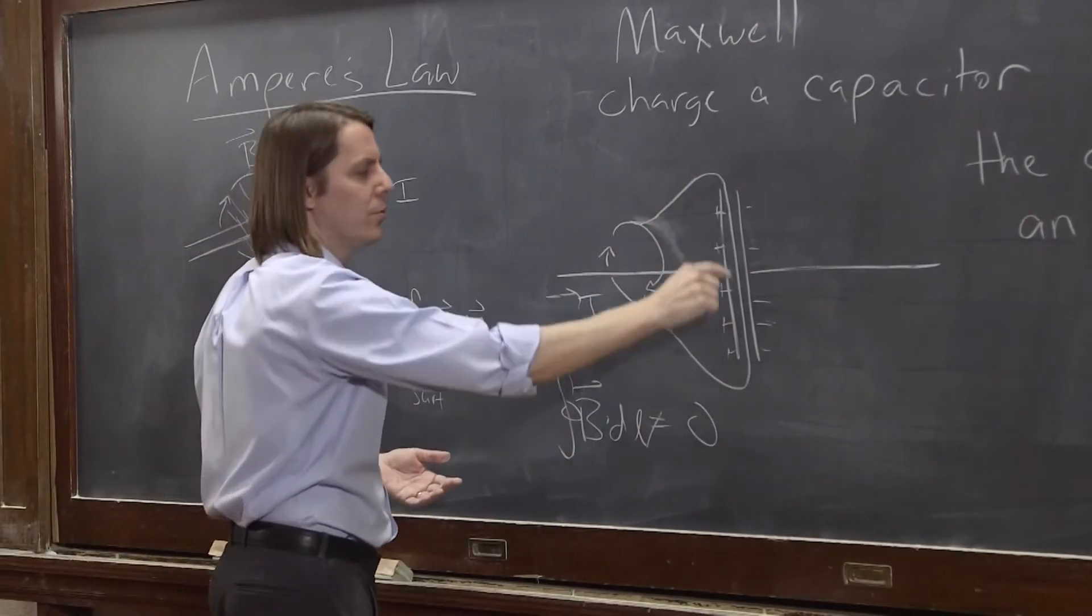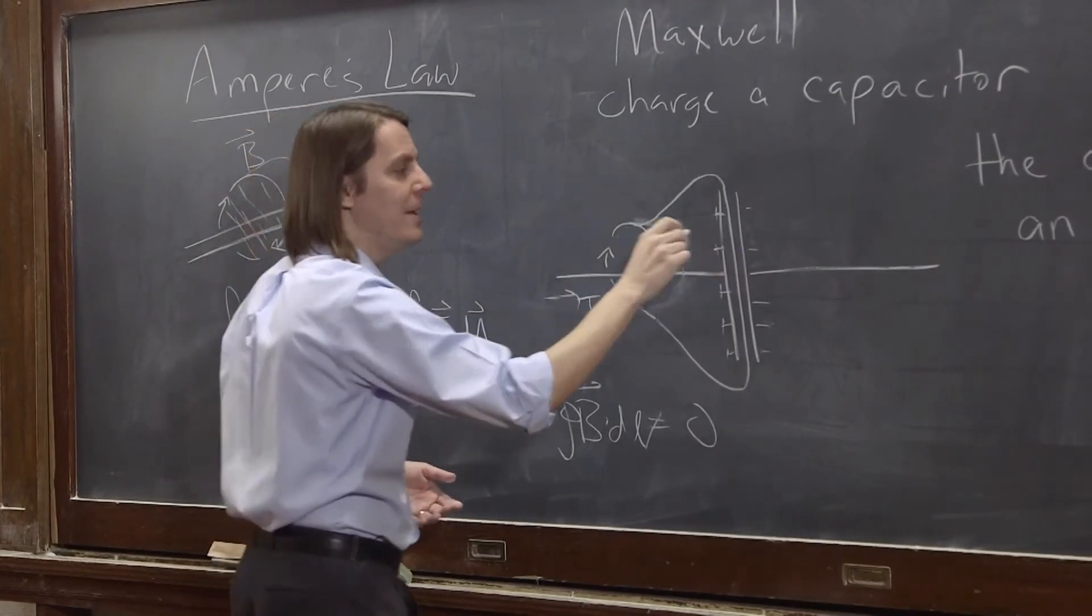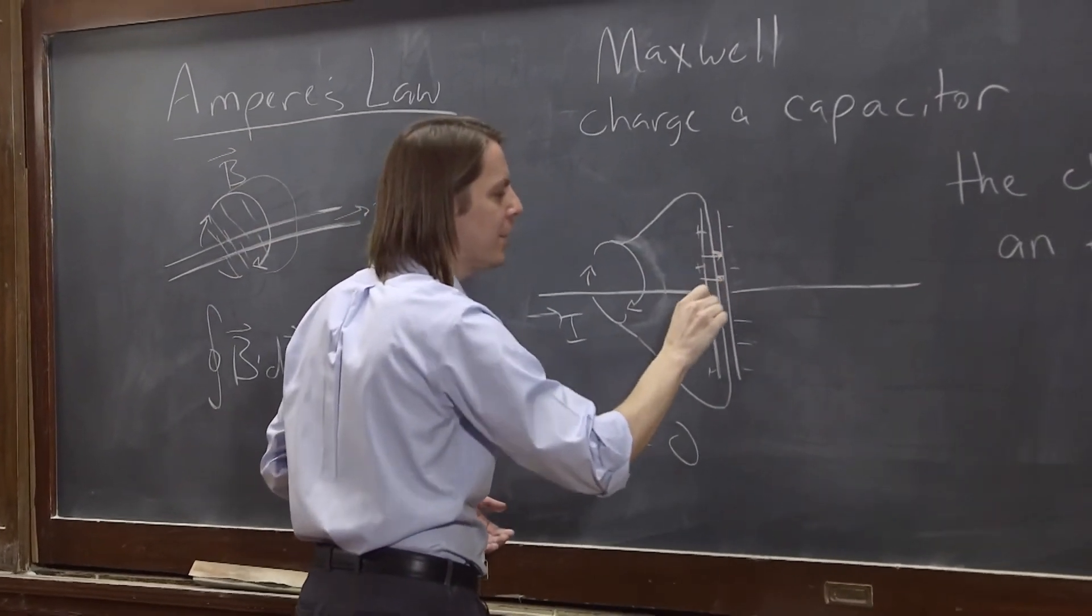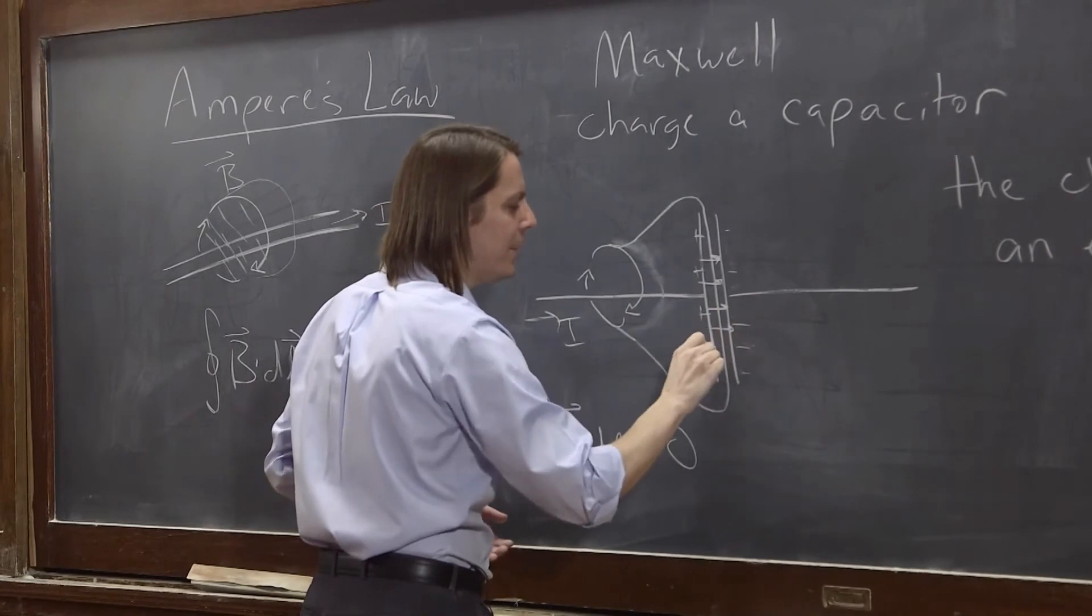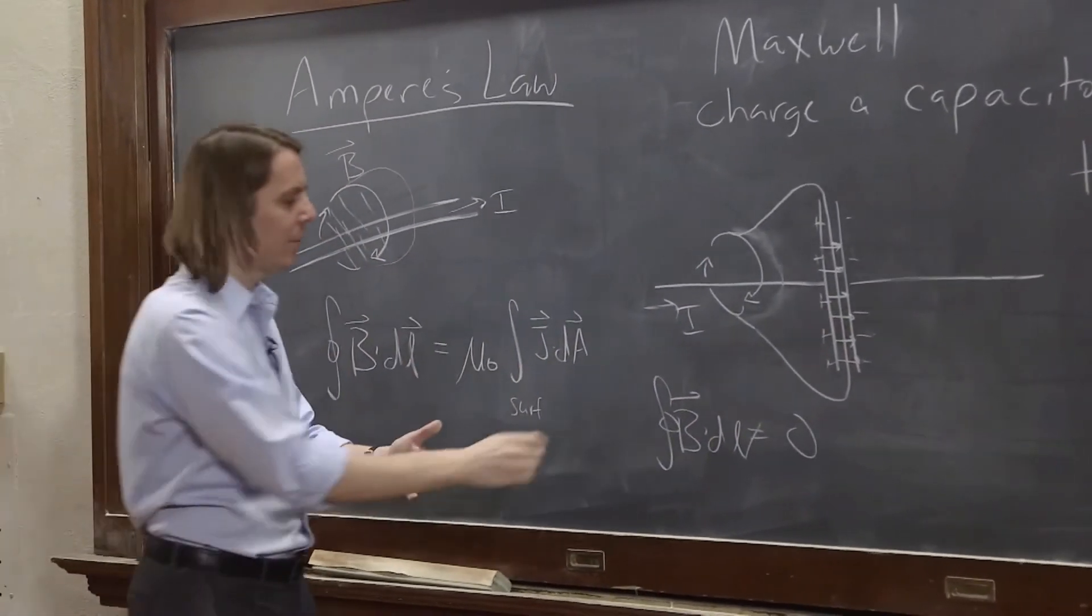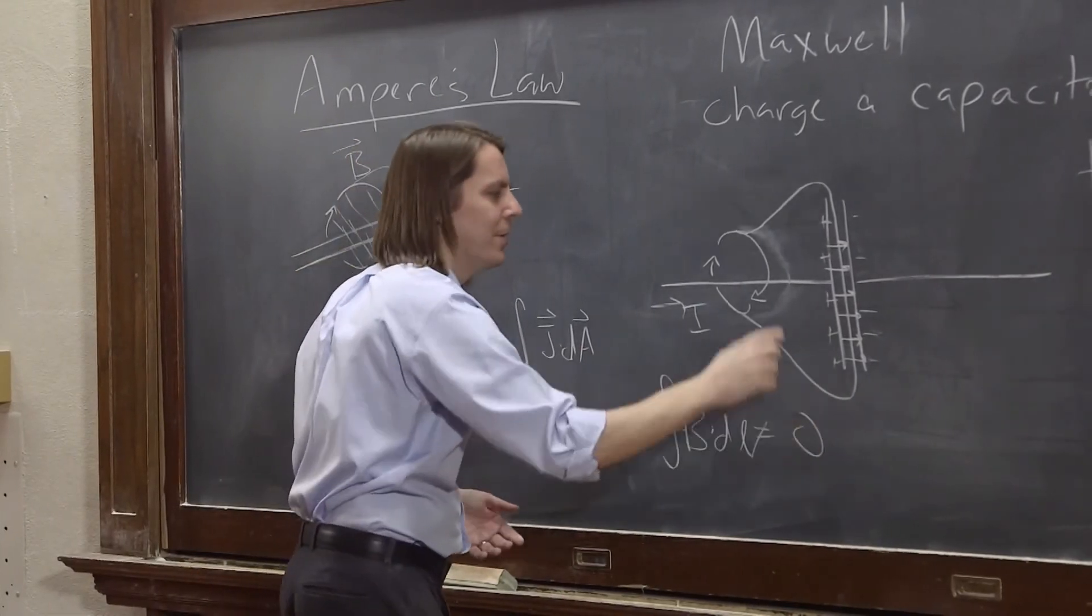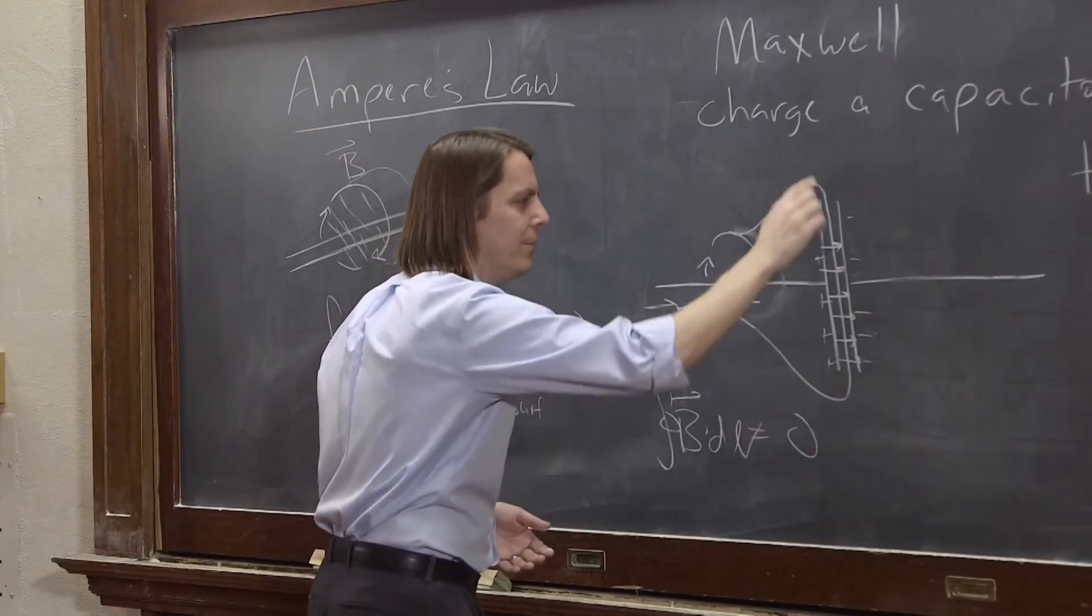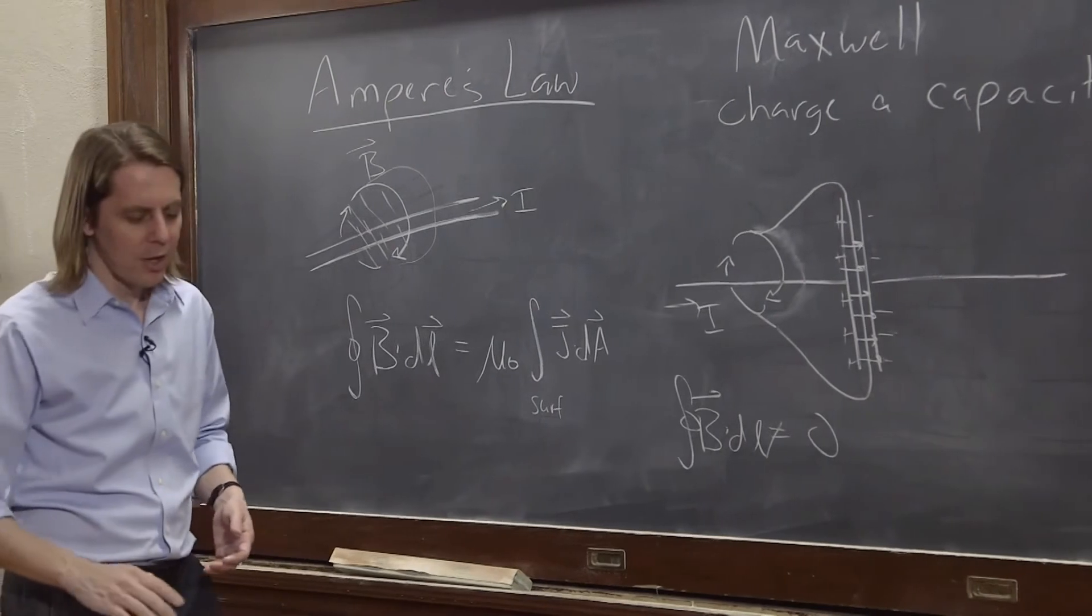And the thing that goes through the surface here is an E field, right? Because an E field is created inside the capacitor. So if you think about a changing E field, then you'll always have this covered. You'll always have something on the right side of this equation. You'll either have current if you're here, or you'll have a changing E field if you're here. And you'll always be okay.